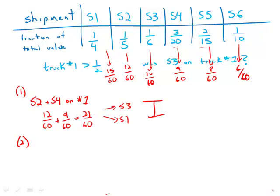Statement number two tells us that S1 and S6 are on truck number two. So S1 and S6, between the two of them, they account for 21 sixtieths of the data. They're on truck two.